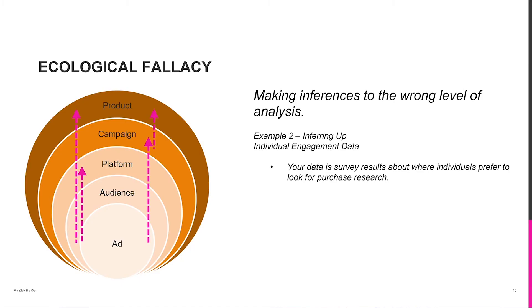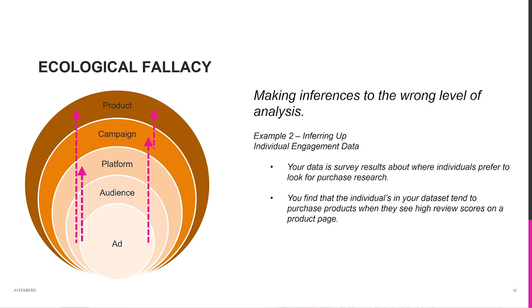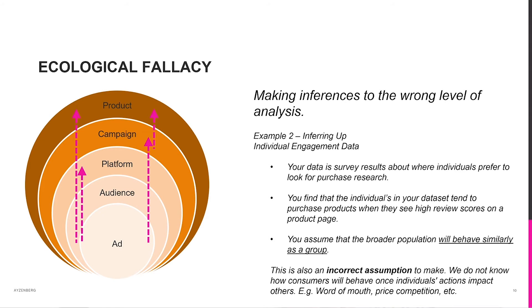It's also incorrect to make inferences in the opposite direction, for different but interesting reasons. For example, you have survey results where individuals are telling you where they're going to research a product beforehand. You'll find that people are more likely to purchase a product when they see high review scores, but you're assuming people behave the same in a group. While less dangerous than inferring individual behavior to a group, it's still something to be careful about. People behave differently when interacting together — when they talk to each other about products, you'll have competitor behavior to watch out for. Things are just going to be different out in the wild.